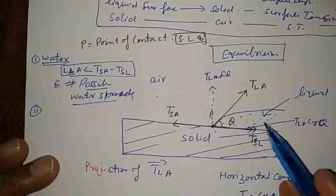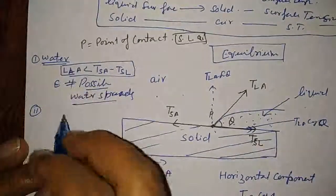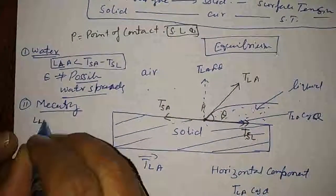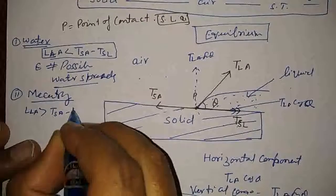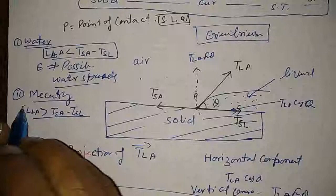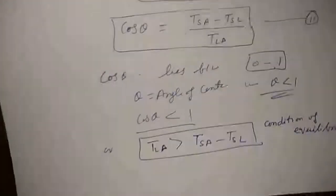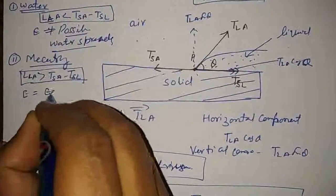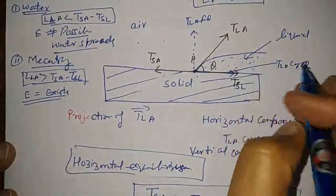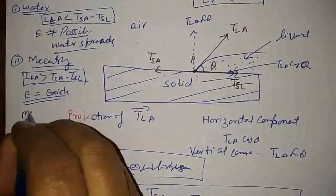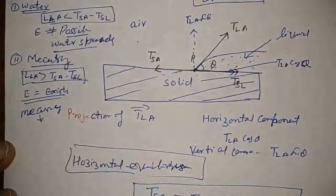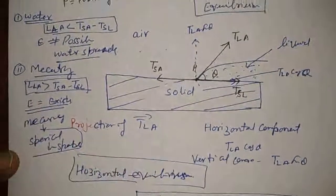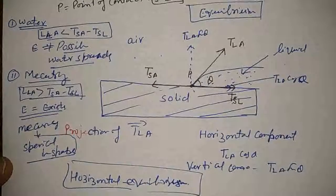If in place of water we keep mercury, then T_LA equals T_SA minus T_SL. This is according to the condition of equilibrium, which means equilibrium exists. If equilibrium exists, in that condition mercury, when it is a small drop, gets converted into a spherical shape. That is why small drops of mercury are spherical.